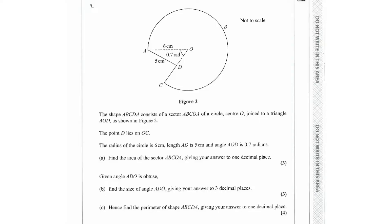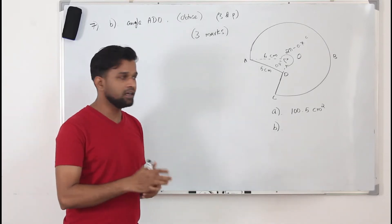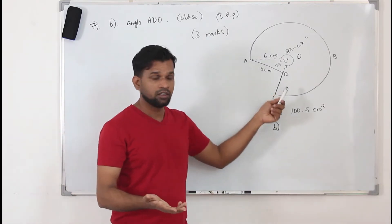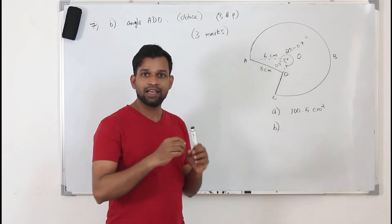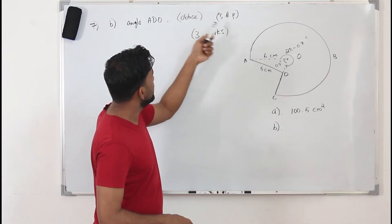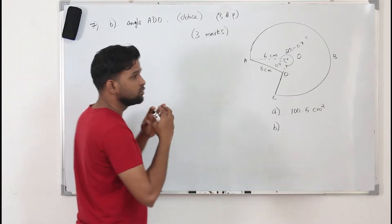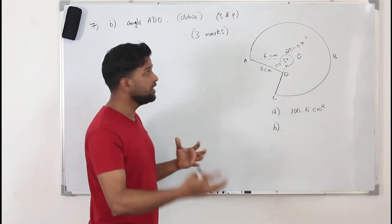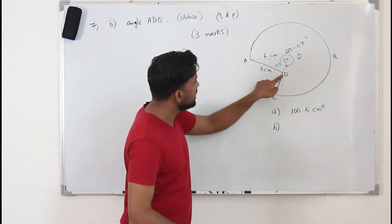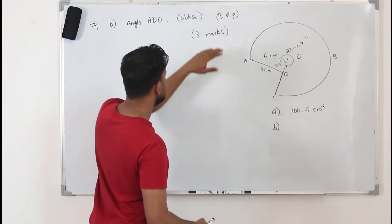In Part B, they want you to find the angle ADO, given that it's an obtuse angle. You cannot omit the word obtuse, because when you find the angle you may get an acute angle. When they say obtuse, you need to take π minus whatever your acute angle is. Write the answer in three decimal places — all these things are very important. You need to read the question word by word, very carefully. Part B is worth three marks.